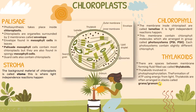Let's look into the chloroplasts. Photosynthesis takes place inside the chloroplasts. The chloroplasts are organelles surrounded by two membranes called the envelope. As you can see from this diagram, there are two layers — the inner membrane and the outer membrane of the chloroplasts — and these two membranes are called the envelope. The envelope is found in mesophyll cells in leaves. Palisade mesophyll cells contain most chloroplasts, but they are also found in spongy mesophyll cells and guard cells also contain chloroplasts.